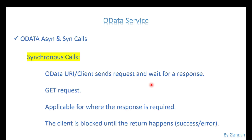The response may be success or error, but the response is mandatory. The most applicable scenarios for synchronous calls is the GET request. I'm sending information and I need the information back — for example, sending a P1 number and wanting P1 information back, or sending material information and wanting all the material details.